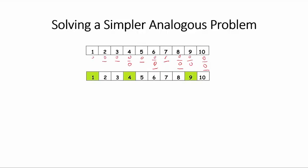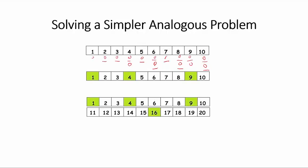We might still not feel too confident about making a conjecture, so why not look at 20 mailboxes? When we do that, we see that the open lockers are 1, 4, 9, and 16. Hmm, this is 1 squared, 2 squared, 3 squared, and 4 squared.